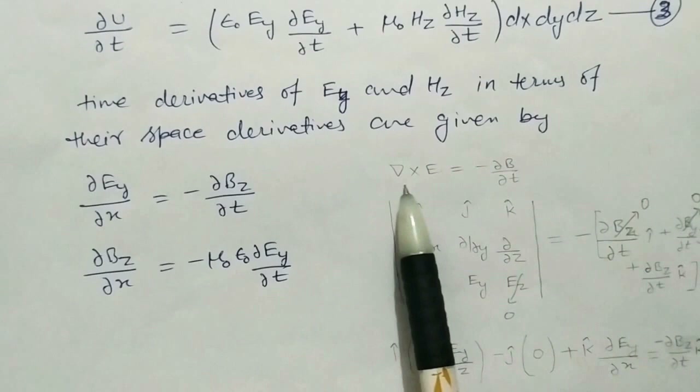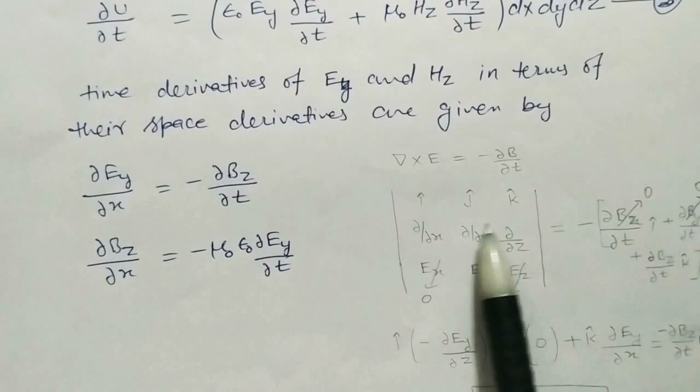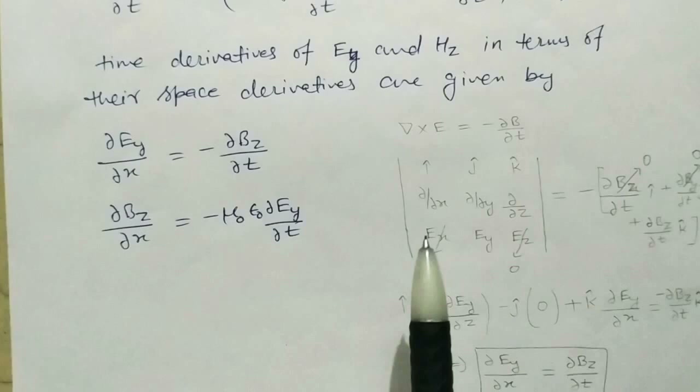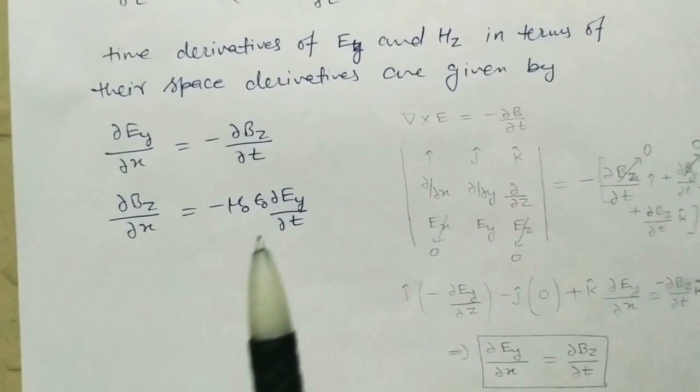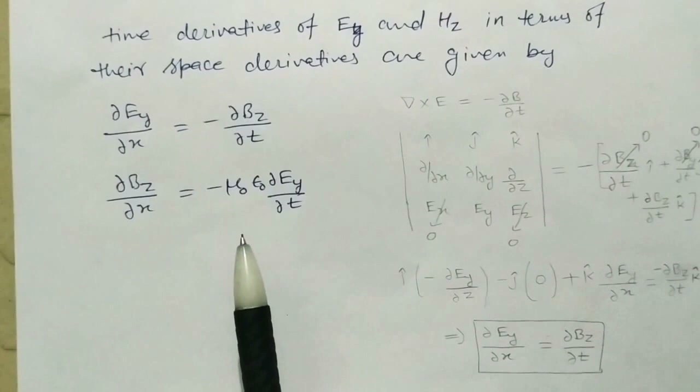From Maxwell's third equation, del cross E equals minus del B by del T. Expanding this in determinant form and putting the complete B vector with components B_x, B_y, B_z — we know that when the wave propagates in the x-direction, the electric and magnetic fields associated with the wave are perpendicular to the x-direction. The direction of propagation is given by E cross B.